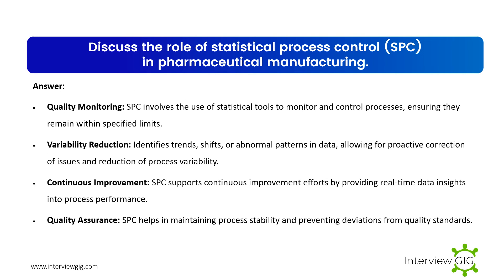Discuss the role of statistical process control (SPC) in pharmaceutical manufacturing. SPC involves the use of statistical tools to monitor and control processes, ensuring they remain within specified limits. It identifies trends, shifts, or abnormal patterns in data, allowing for proactive correction of issues and reduction of process variability. SPC supports continuous improvement efforts by providing real-time data insights into process performance and helps maintain process stability, preventing deviations from quality standards.